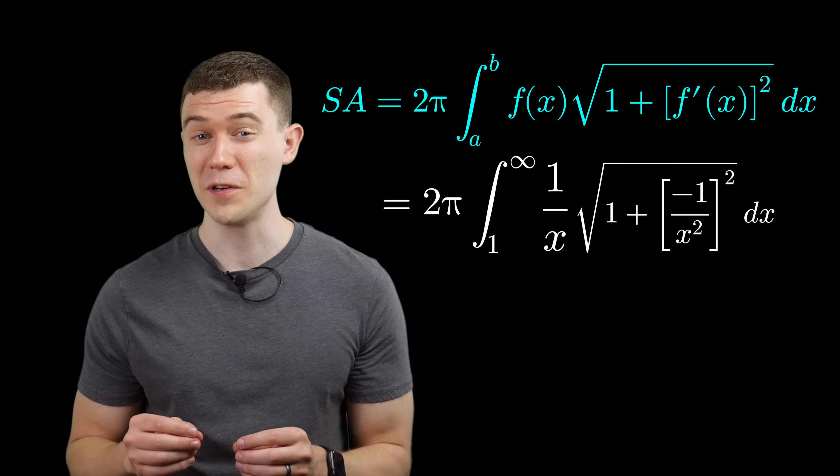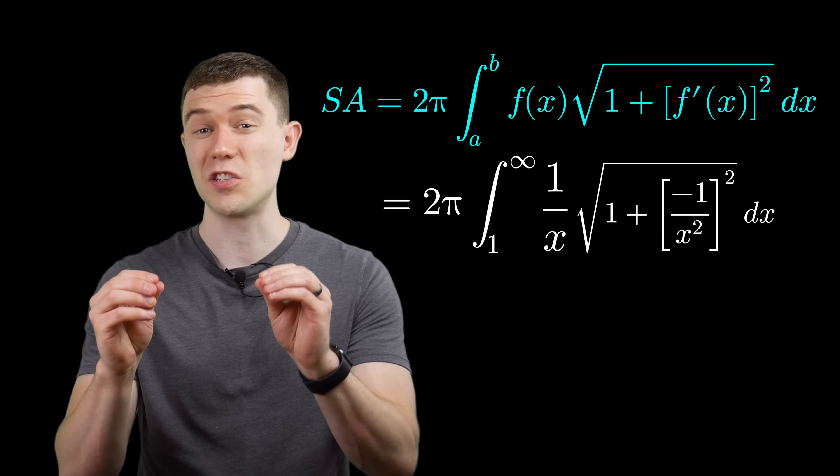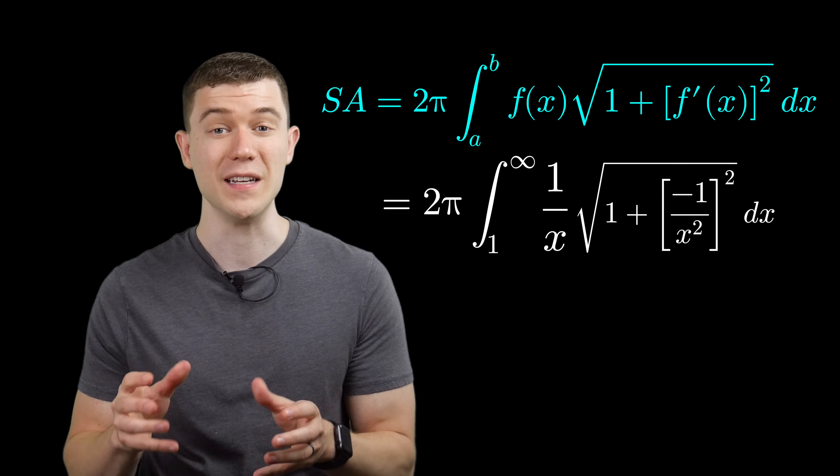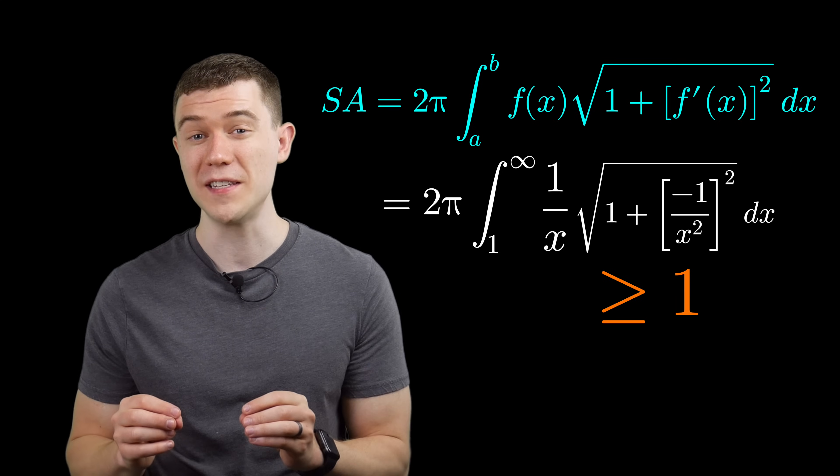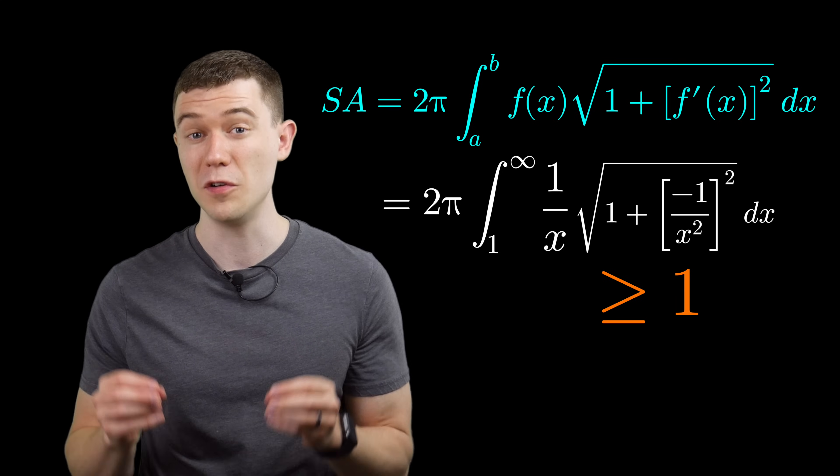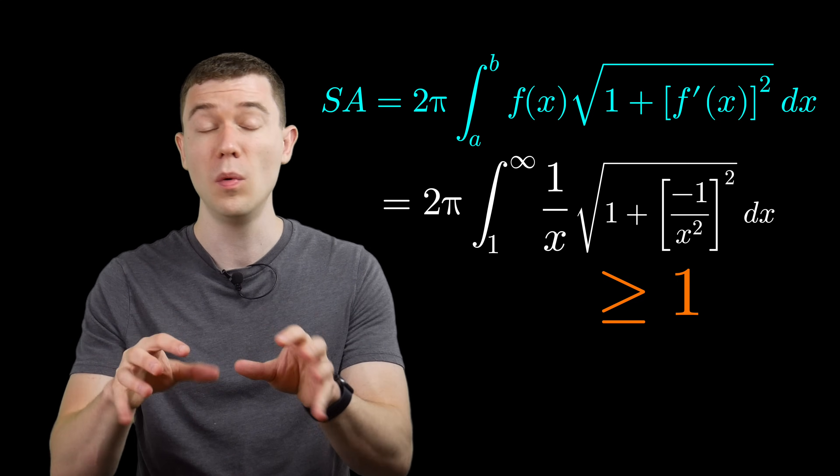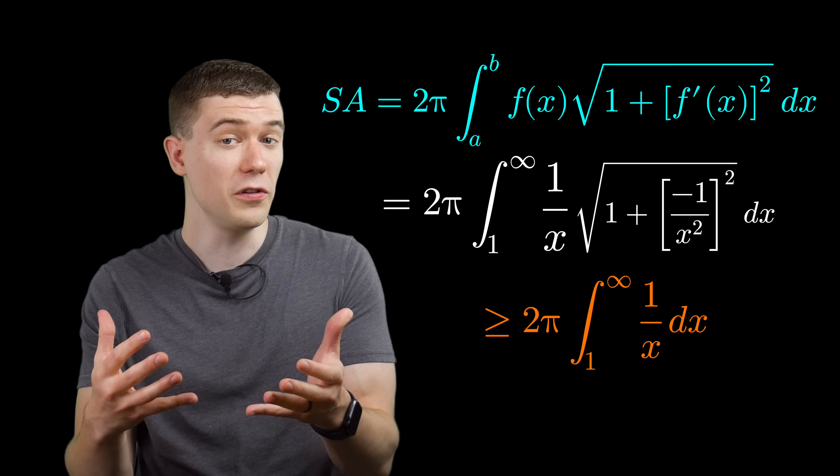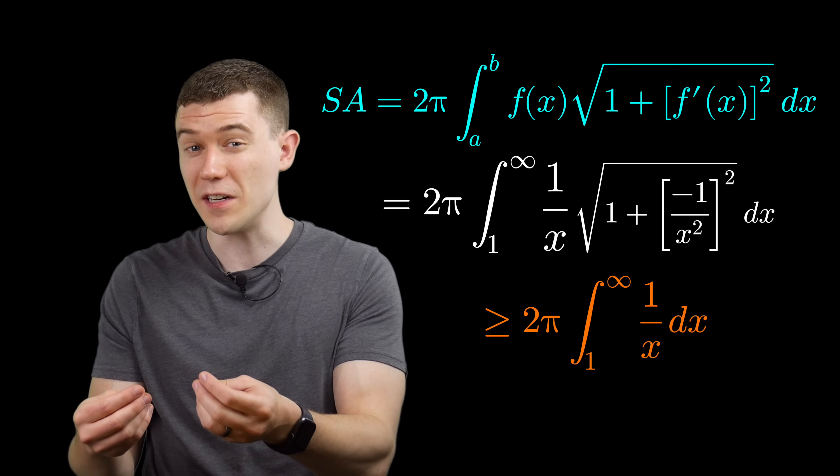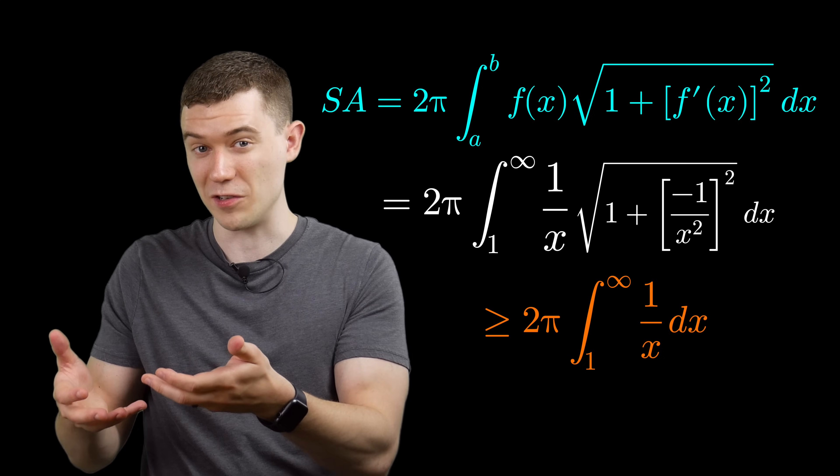Now this integral might be a little bit cumbersome to compute. So we're going to cheat a little bit. Notice that that square root part of the integrand is always going to be positive. So if we do a direct comparison, very similar to how we do it with series, let's compare the integrand we have now to the integrand without that square root part. Our original integrand will be greater than this integrand. And so the original integral will be greater than this integral.